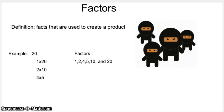The example: the factors of 20 are 1 times 20, 2 times 10, and 4 times 5. And the factors of 20 are 1, 2, 4, 5, 10, and 20.